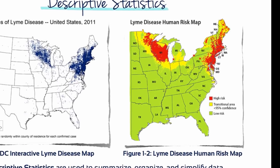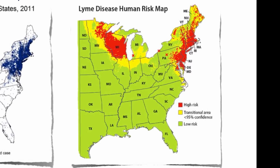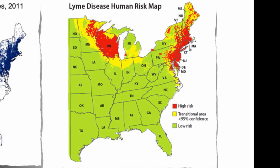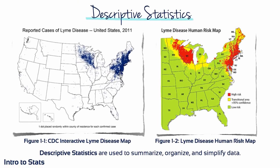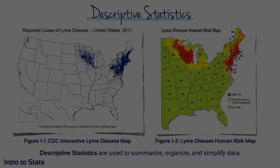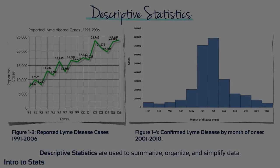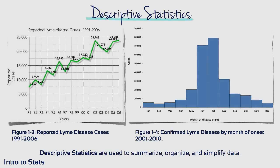Think about the sheer volume of data summed up in these figures. We can readily appreciate areas associated with high or low risk of contracting Lyme disease just by looking at them. Here are two further examples of descriptive statistics that summarise, organise and simplify tens of thousands of Lyme disease data.